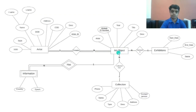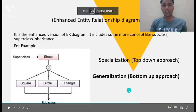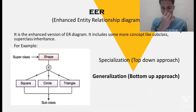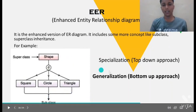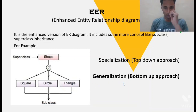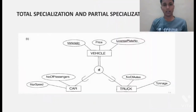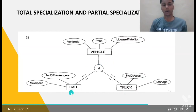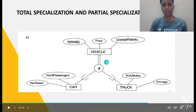Now my friend Ari will continue. Now let's continue with the EER — that is, Enhanced Entity Relationship diagram. How it is different from the ER diagram is that it also includes class-of-class relationships like superclass and subclass, with shapes like square, circle and triangle. There are two approaches: generalization and specialization — a top-down approach and a bottom-up approach. Total and partial specialization: the double line symbol denotes total specialization and the single line symbol denotes partial specialization. Total specialization means any entity must belong to one of the subclasses, but in partial specialization that is not the case.